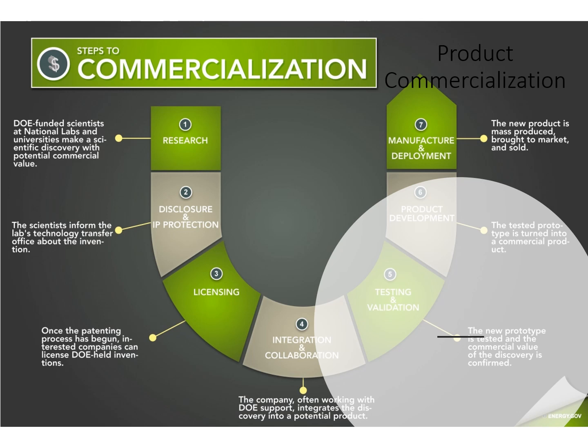Fourth is integration and collaboration — the company often works with DOE support to integrate the discovery into a potential product. Fifth is testing and validation — the new prototype is tested and the commercial value of the discovery is confirmed. Sixth is product development — the tested prototype is turned into a commercial product. Last is manufacture and deployment — the new product is mass produced, brought to market, and sold to the consumer.